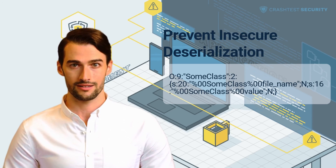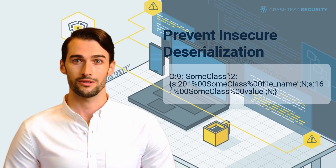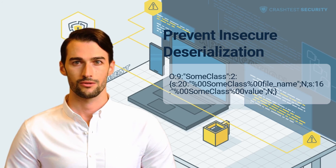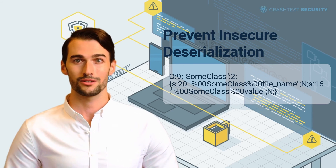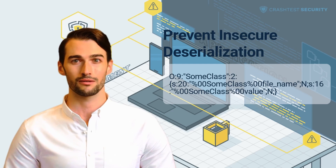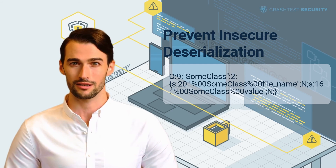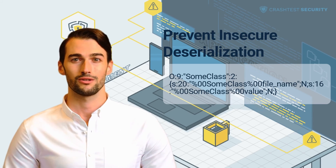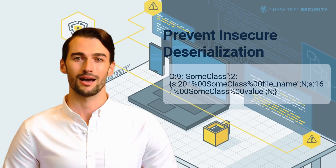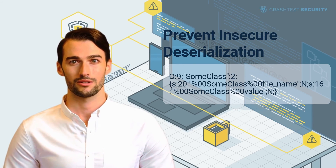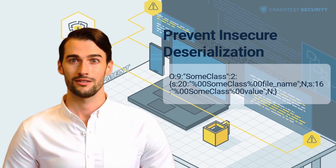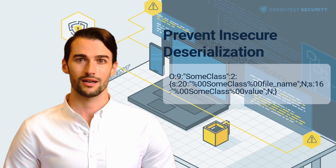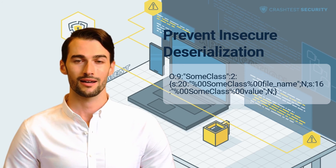In case you have to accept serialized objects, here are some tips for stopping insecure deserialization: introduce digital signatures and other integrity checks to stop malicious object creation or data tampering; run deserialization code in low privilege environments; keep a log of deserialization exceptions and failures; execute strict constraints for deserialization processes before object creation; limit and check all incoming and outgoing network activity from deserialization containers and servers; keep tabs on deserialization activities to identify constant deserialization by a user; and use language-agnostic deserialization methods like JSON, XML, and YAML.